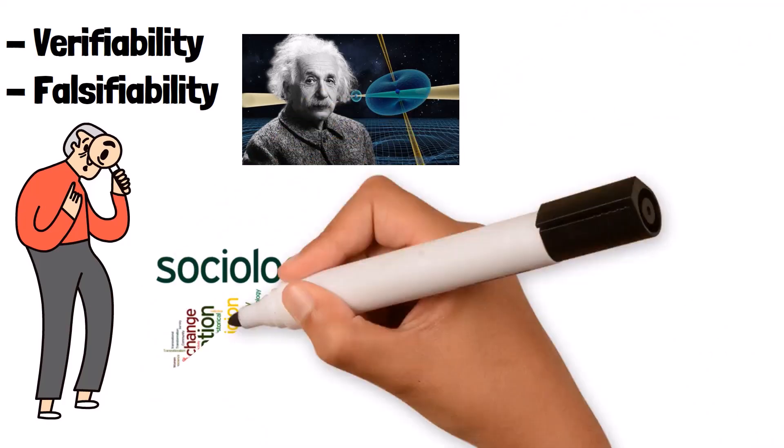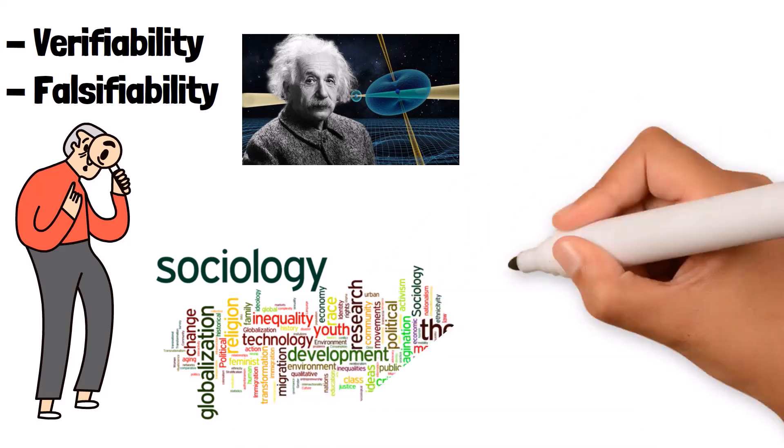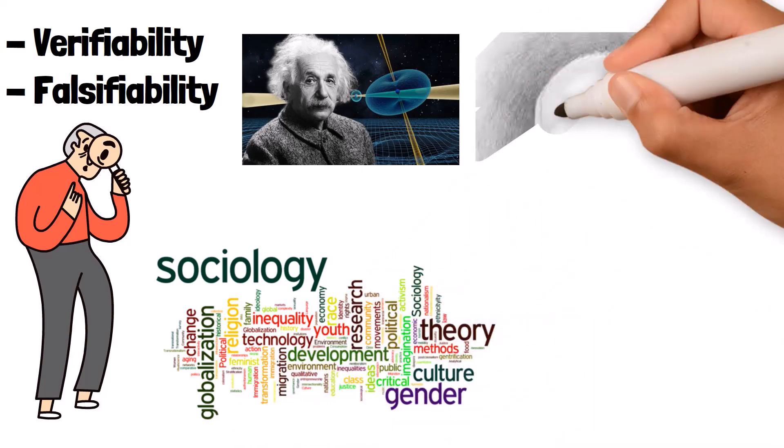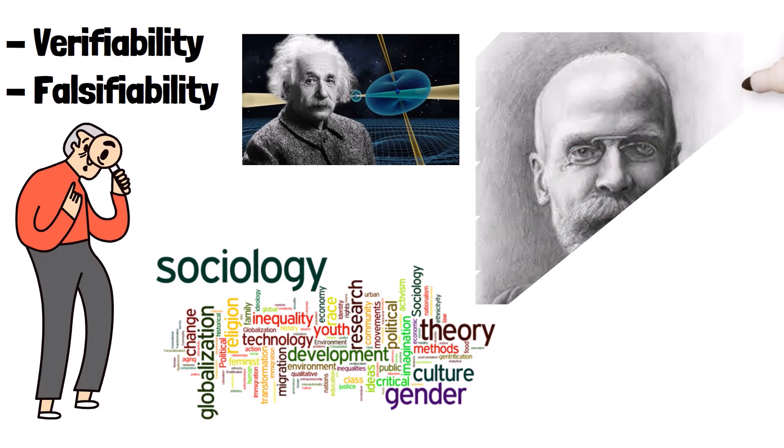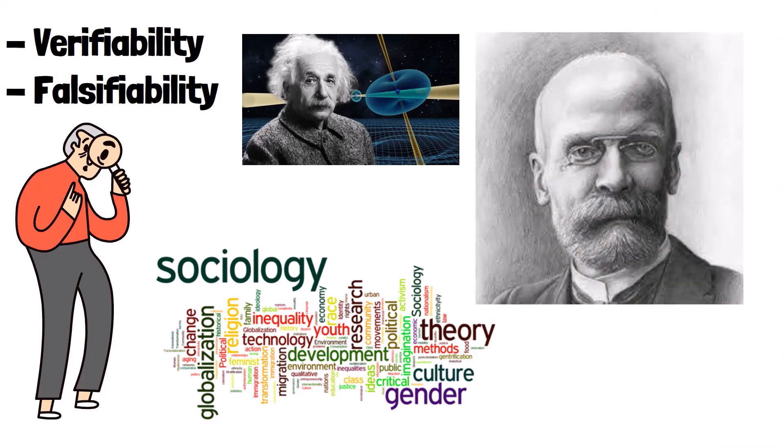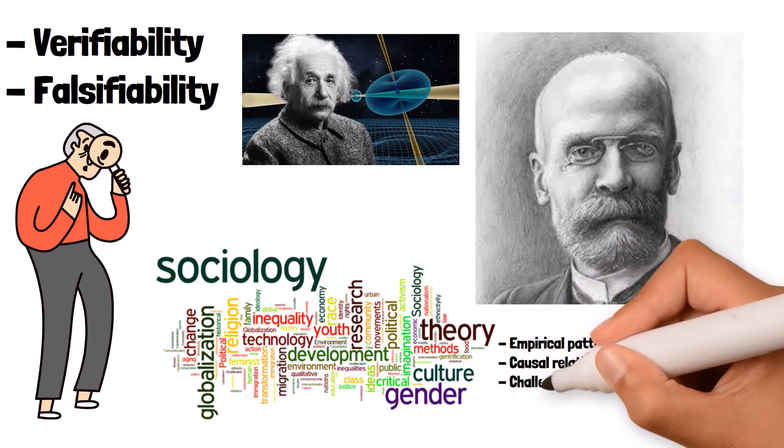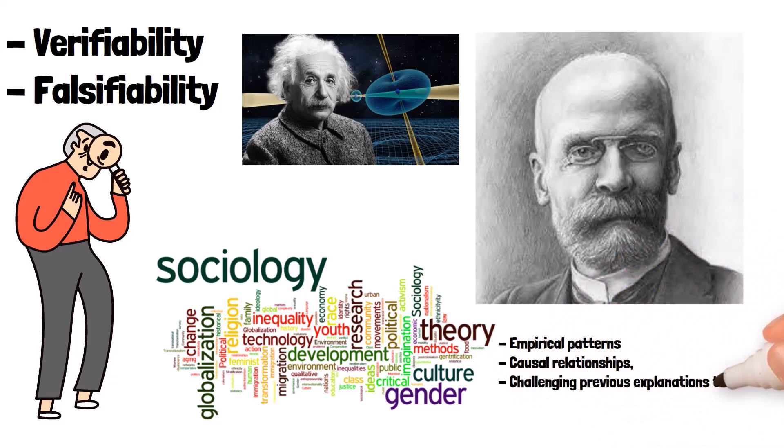Positivism also influenced the development of social sciences, such as sociology. Positivist sociologists like Emile Durkheim applied scientific methods to study social phenomena. Durkheim's research on suicide rates, for example, aimed to identify empirical patterns and causal relationships, challenging previous explanations that relied on moral or religious beliefs.